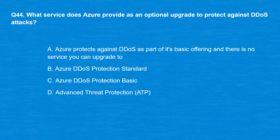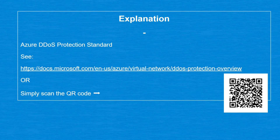Question 44: What service does Azure provide as an optional upgrade to protect against DDoS attacks? Option A: Azure protects against DDoS as part of its basic offering and there is no upgrade. Option B: Azure DDoS Protection Standard. Option C: Azure DDoS Protection Basic. Option D: Advanced Threat Protection (ATP). The correct answer is Option B, Azure DDoS Protection Standard.